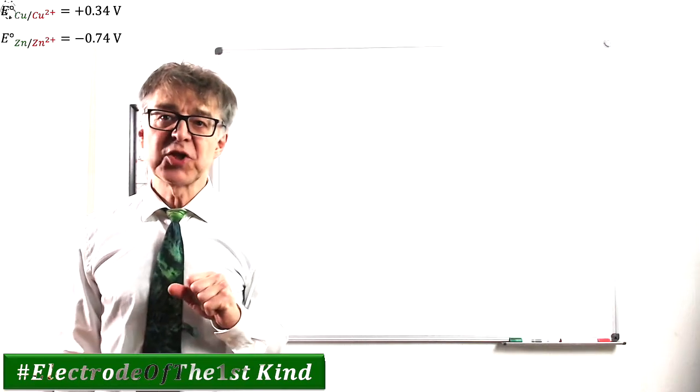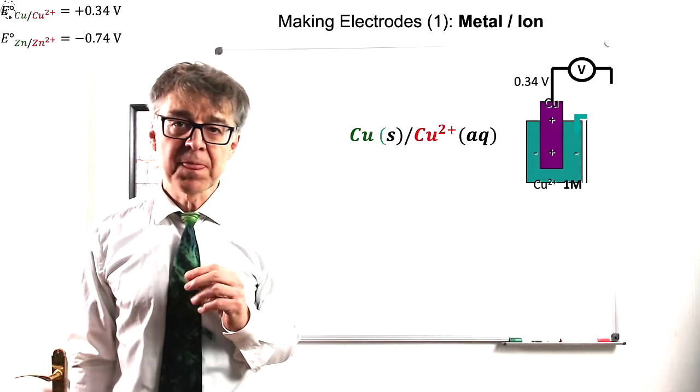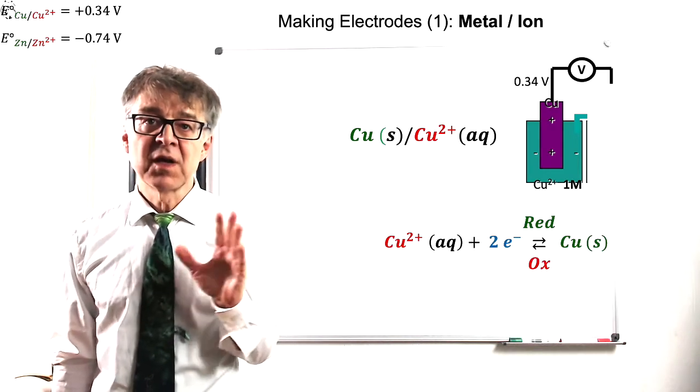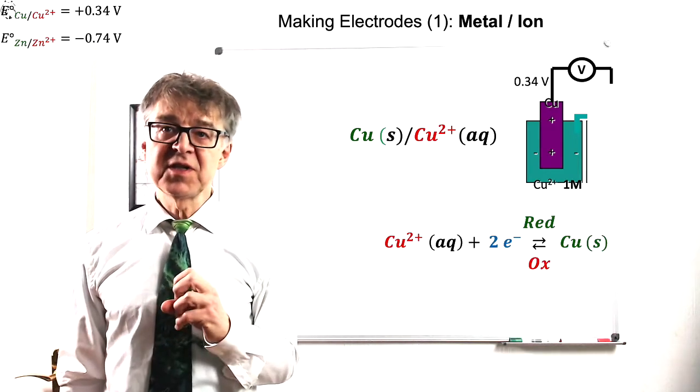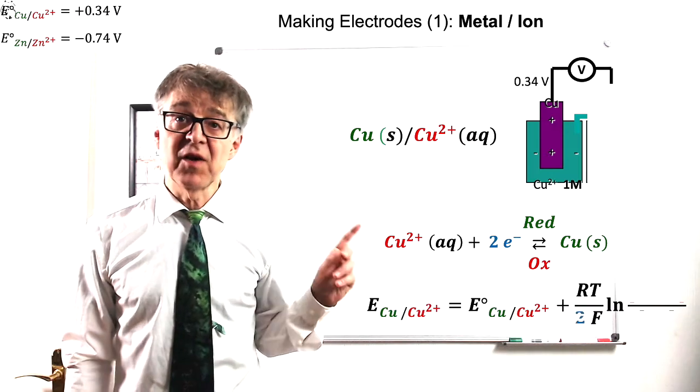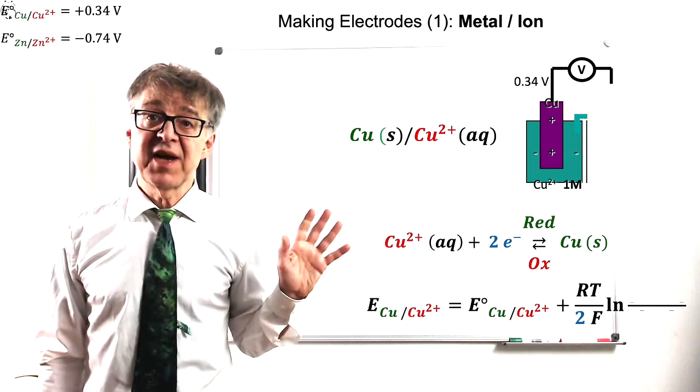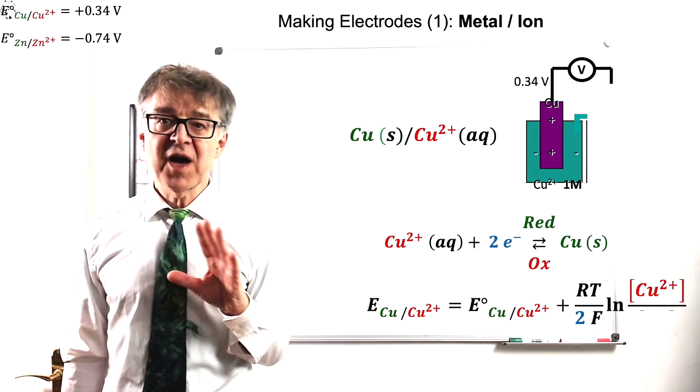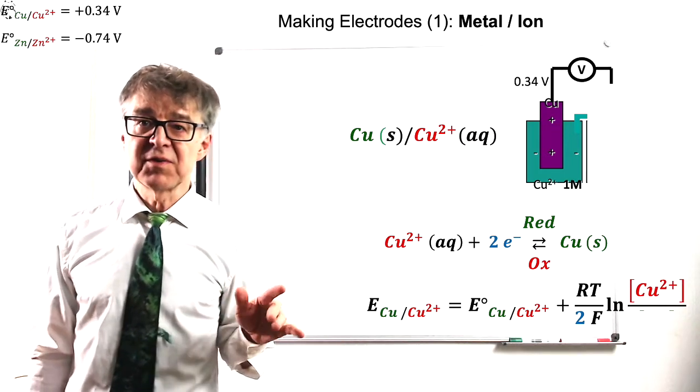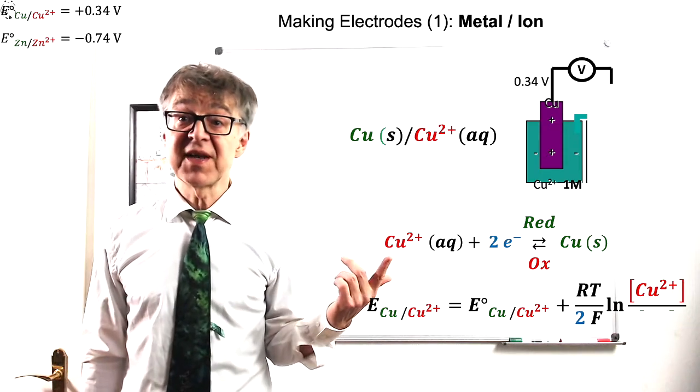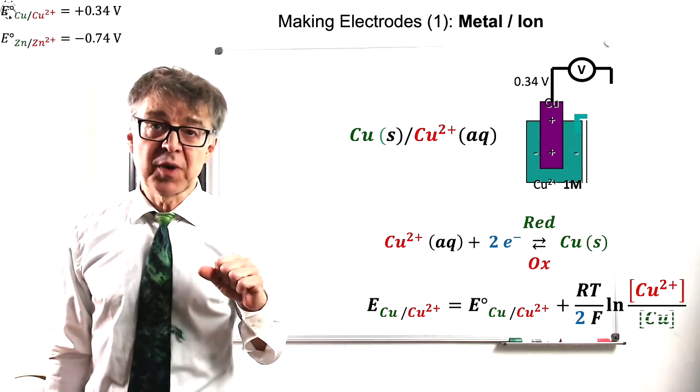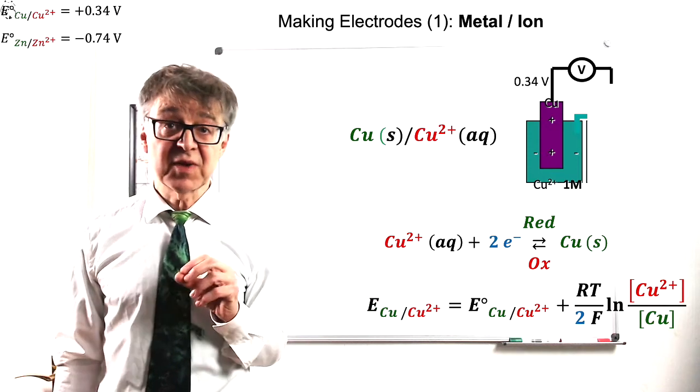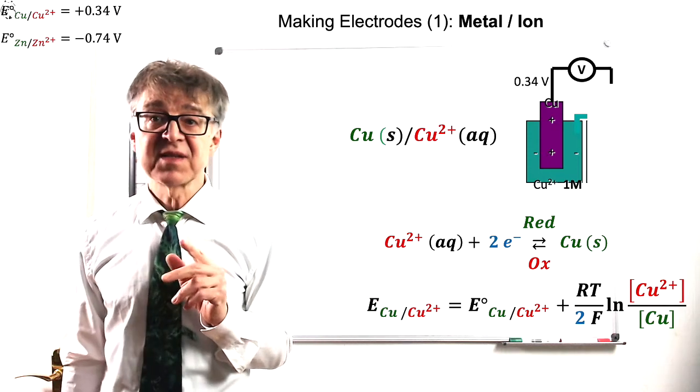Let's set up the Nernst equation for a copper electrode. Let's formulate the electrode reaction first. In the electrochemical series, we will find the corresponding E0. In the Nernst factor, the number of electrons nu sub E is 2. The numerator of the argument of the logarithm shows the concentration of the oxidized species, i.e., copper 2 plus ions. The denominator of the fraction depicts the concentration of the reduced species, i.e., copper metal.